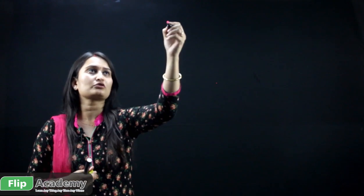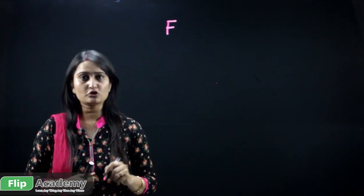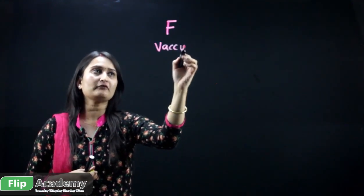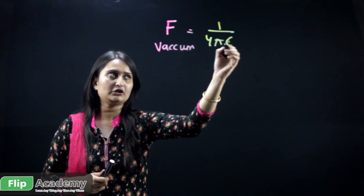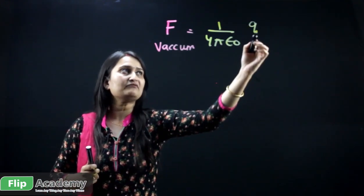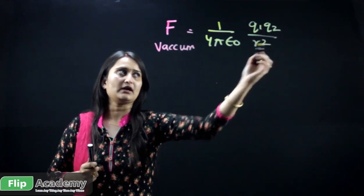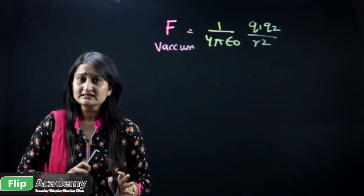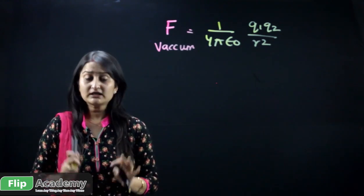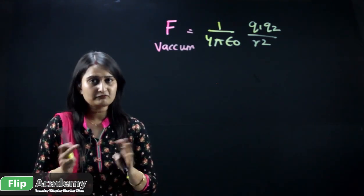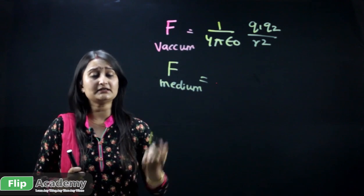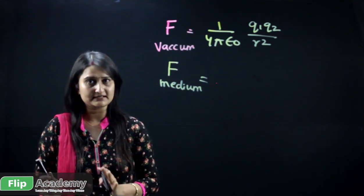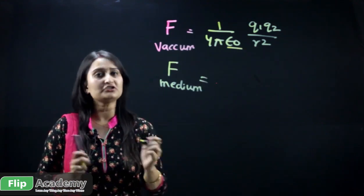If we take the absolute permittivity in free space, then the Coulomb force is found for free space or vacuum. The formula becomes: F = (1 / 4πε₀) × (Q1 Q2 / R²). However, the question arises: is the force always found in vacuum? No — the force is found in different media. When the force is found in a different medium, ε₀ changes.